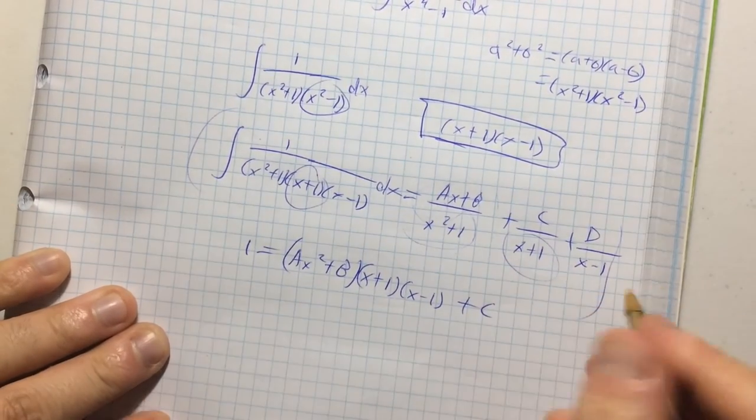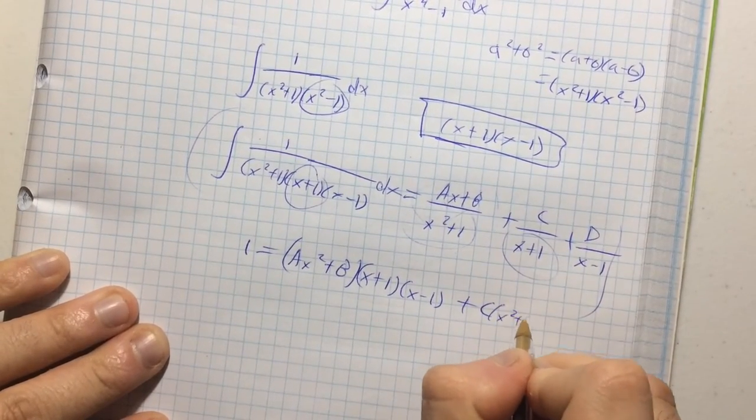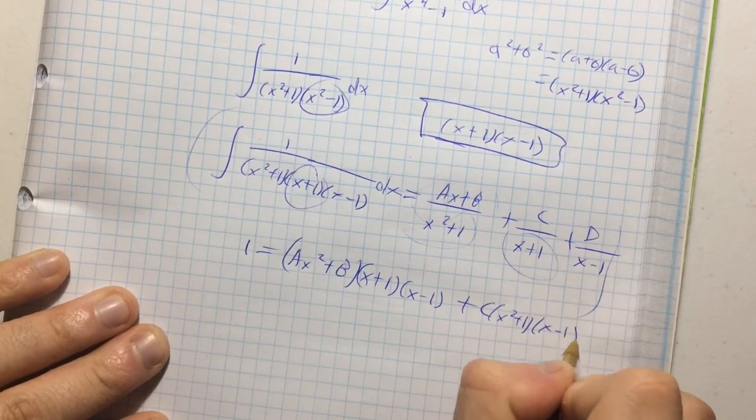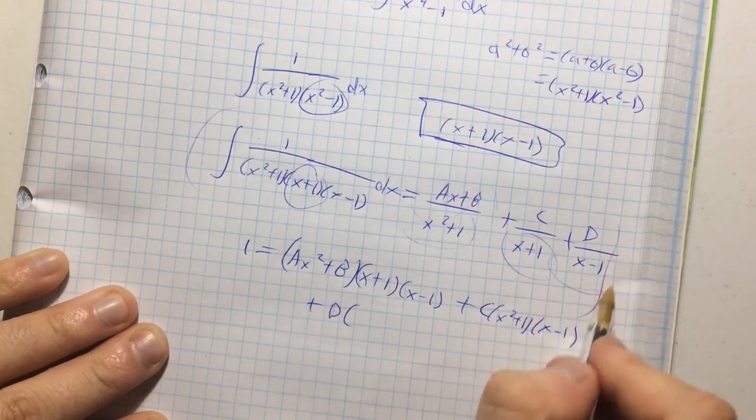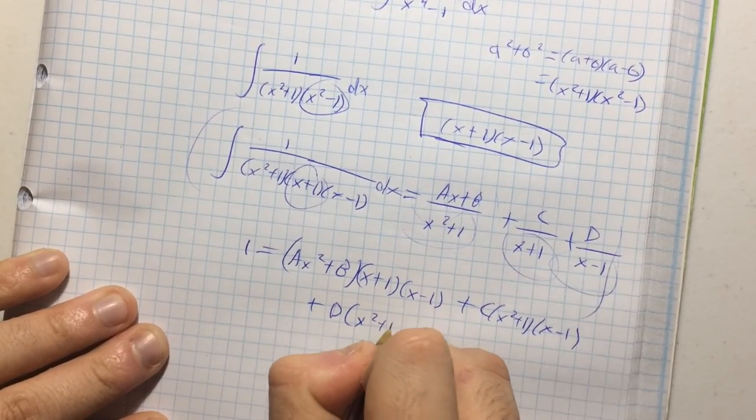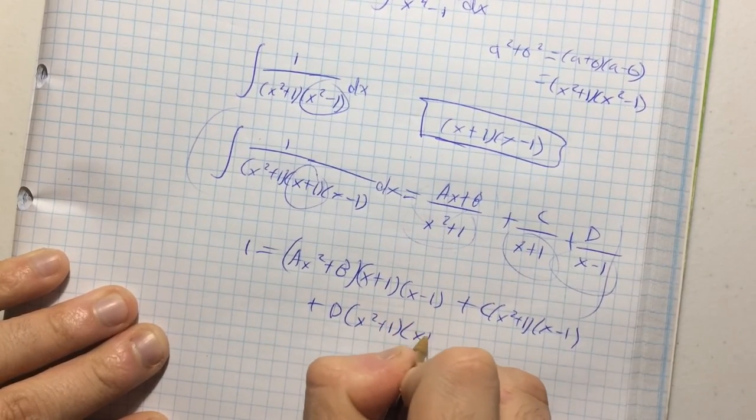multiplied by everything except x plus one. So, that's x squared plus one, x minus one, plus d, multiplied by everything except x minus one. So, that's x squared plus one, x plus one.